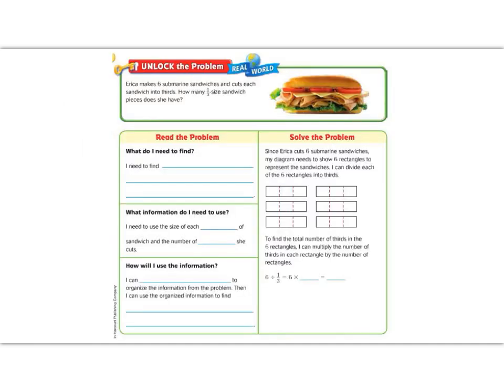Here we go, 5th graders, the first lesson of Unit 8. Let's begin by reading the Unlock the Problem. Erica makes six submarine sandwiches, and she cuts each sandwich into thirds. How many one-third-sized sandwich pieces does she have?